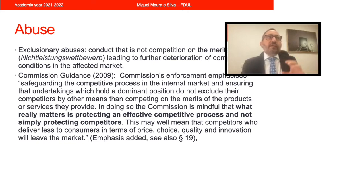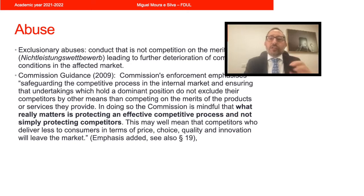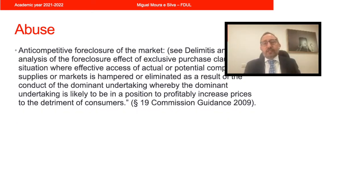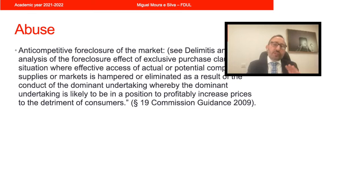The question is: if firms leave the market because they are being forced out through conduct that is not competition on the merits — such as methods seeking to impair consumer choice or affect the cost structure of competitors — then that could be an abuse. The Commission's 2009 guidance is mostly focused on these exclusionary abuses. The Commission states in paragraph 19 that exclusionary abuses are really about safeguarding the competitive process in the single market, and we do not want dominant firms to exclude competition on grounds that are not competition on the merits.